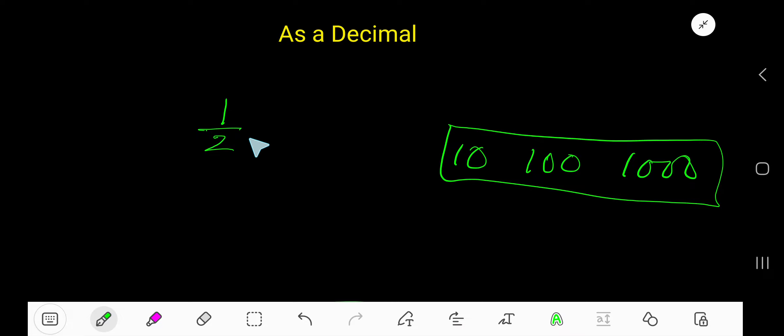1 over 2 as a decimal. To convert this fraction to decimal, just try to convert the denominator as a power of 10, like 10, 100, 1000. This means 10 to the power 1, 10 to the power 2, 10 to the power 3.